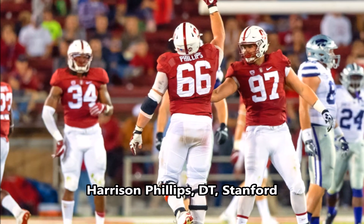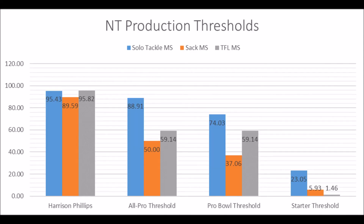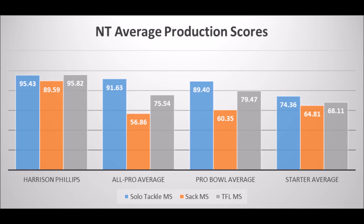Harrison Phillips, defensive tackle out of Stanford: his athleticism traits are 76.98 in explosiveness, 36.13 in speed, and 88.30 in flexibility for his size. He doesn't quite have the speed score of a Pro Bowl defensive tackle, but he's close, and his explosiveness and flexibility are really impressive. On production, he has a 95.43 in solo tackle data, 89.59 in sack data, and 95.82 in tackle-for-loss data — hitting virtually every threshold for All-Pro, Pro Bowl, and starter potential. Well above the position averages, making this a very solid profile for Harrison Phillips.